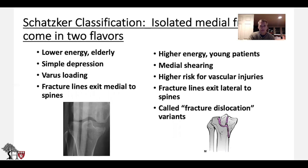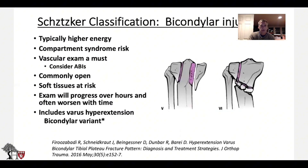These are essentially a fracture dislocation variant where the knee can be more dislocated as the energy increases. The bicondylar tibial plateaus — the 5s and 6s — typically are higher energy. Always think of compartment syndrome as a risk factor. Always do a thorough neuro and vascular exam. These are commonly open fractures.